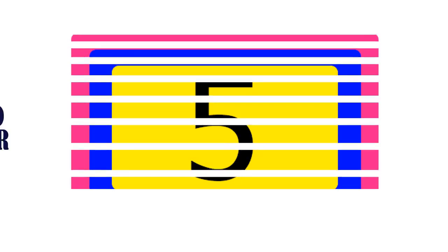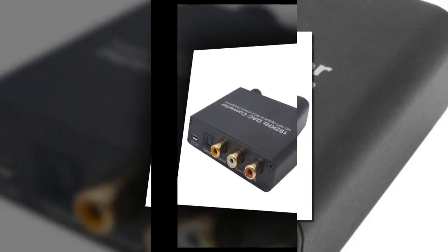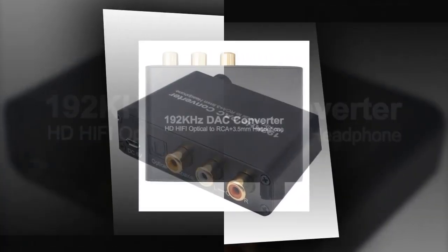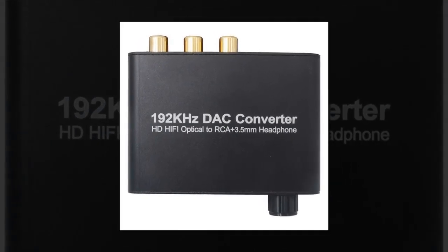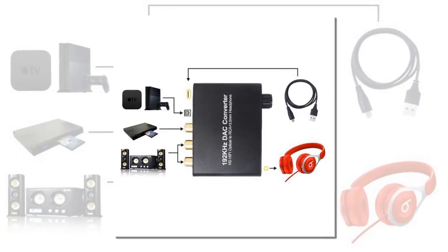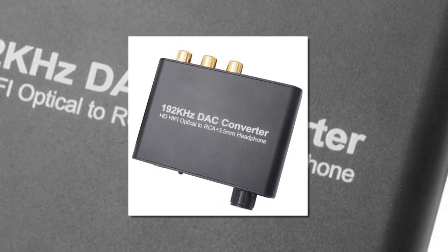Five best digital to analog converters. Item number five is a 192kHz digital to analog converter with built-in high performance audio decoder chip, supporting DTS and AC3, with a super fast start time of about three seconds. Input: optical or coaxial. Output: L/R and 3.5mm headphone port. Switch between optical and coaxial channel input.